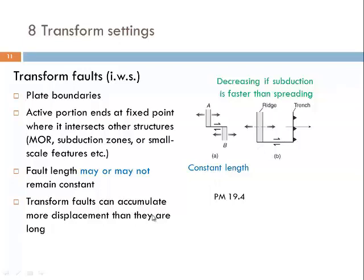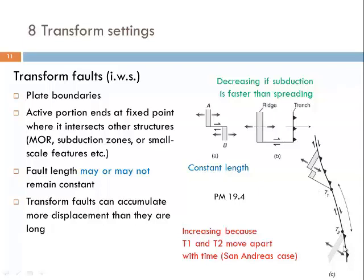The California situation is more complicated: large-scale strike-slip faulting along the San Andreas fault is related to the disappearance and subduction of a mid-oceanic ridge. The closest points of the mid-oceanic ridge or related transform faults are connected by such strike-slip faults forming the new plate boundary. If these two points T1 and T2 separate further and further, then the length of the connecting transform fault would also increase, as is the case with the San Andreas fault.